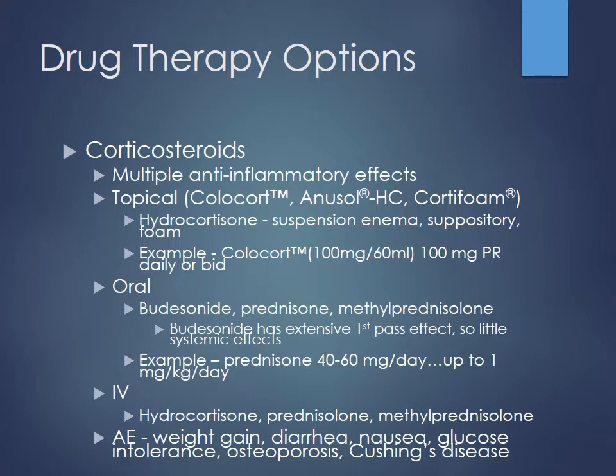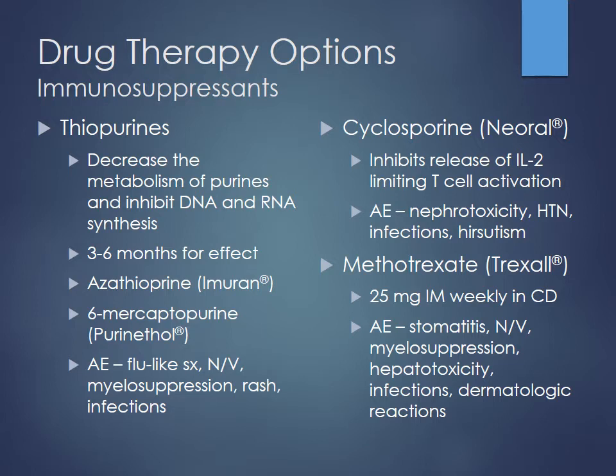To summarize corticosteroid selection: for chronic maintenance of ulcerative colitis therapy, you would not pick oral prednisone due to too many systemic side effects. Oral budesonide or topical hydrocortisone would be the best options for those patients.